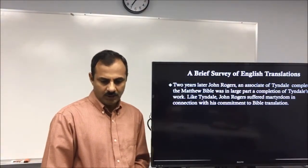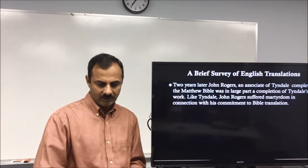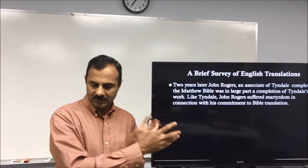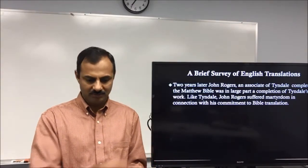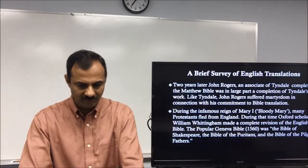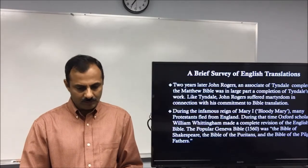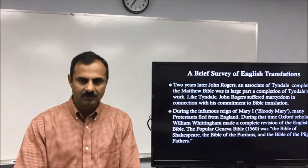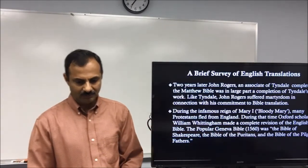Two years later, John Rogers — an associate of Tyndale — completed the Matthew Bible, which was in large part a completion of Tyndale's work. Like Tyndale, John Rogers suffered martyrdom for his commitment to Bible translation — especially during the 1500s, when anyone who tried to translate the Bible was killed. He was martyred during the infamous reign of Mary I, 'Bloody Mary,' during which many Protestants fled from England.